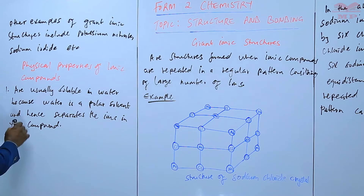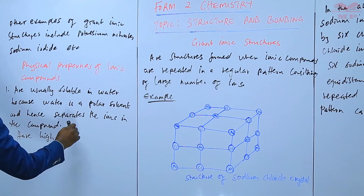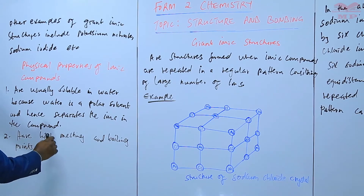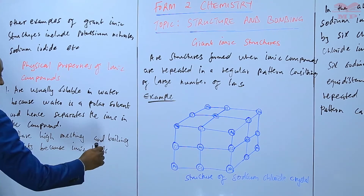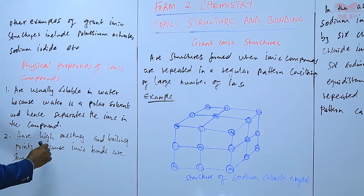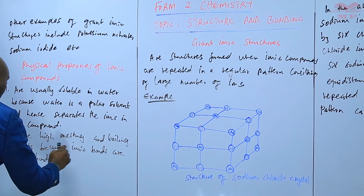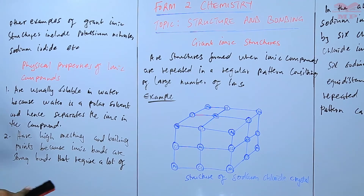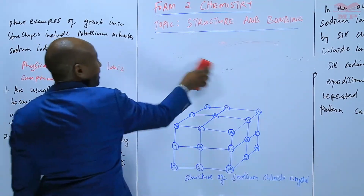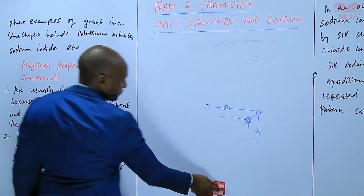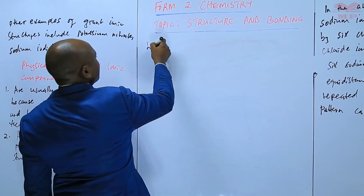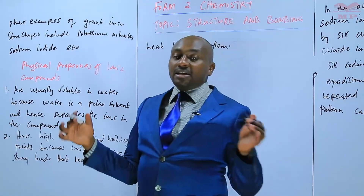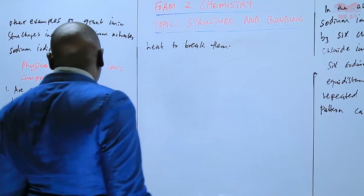Another physical property of ionic compounds is that they have high melting and boiling points. This is because ionic bonds are strong bonds that require a lot of heat to break them. So if they were weak bonds they could easily be separated, but because they are strong bonds that need a lot of heat to break them, that's why ionic compounds have high melting and boiling points.